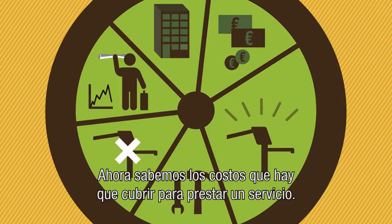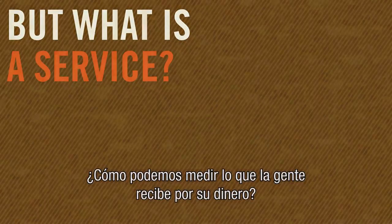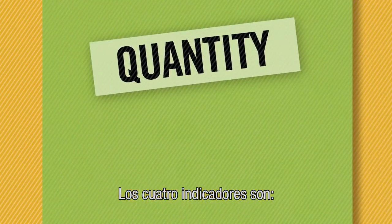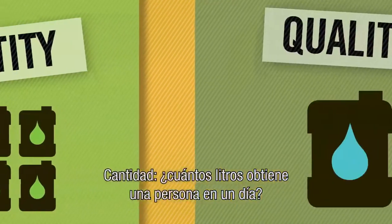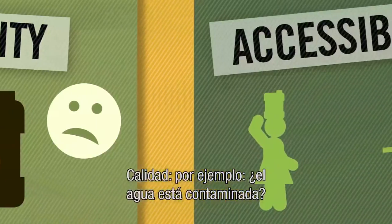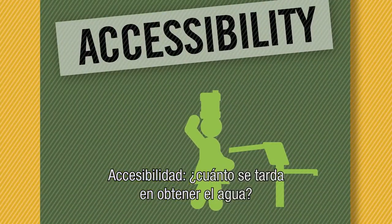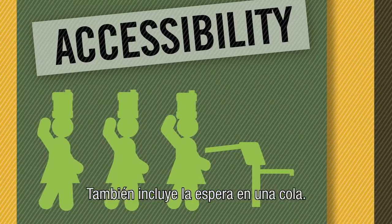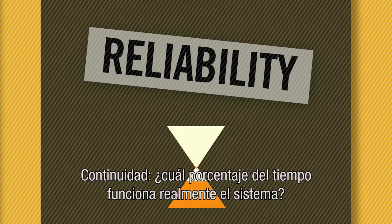Now we know what costs have to be covered to provide a service. But what is a service? How can we measure what people receive for their money? The four indicators are: quantity — how many litres does one person get in a day; quality — for example, is the water polluted; accessibility — how long does it take to get water, including waiting in line; and reliability — how many days is the system actually working.